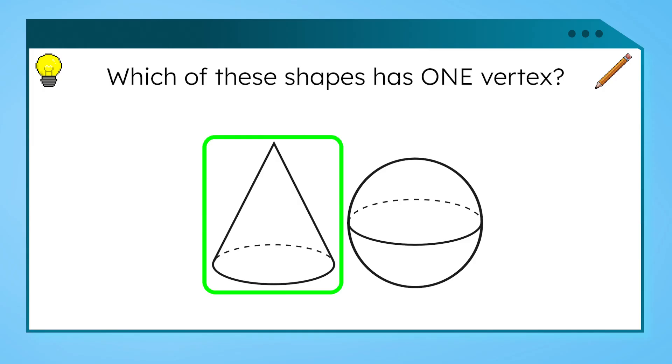Exactly! The cone only has one vertex at the top of the shape. The cone cannot be the answer because we need a shape with no vertices.